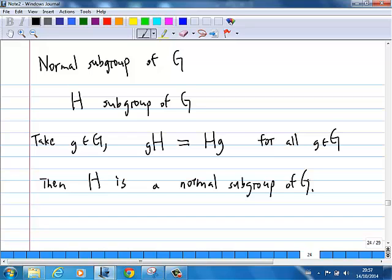For a normal subgroup, of course we can talk about the coset. Now if you have a normal subgroup, then the cosets of H form a group.